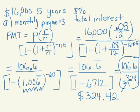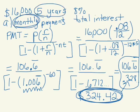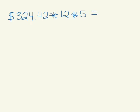The next part says, what's your total interest? So we pay this amount, $324.42, every single month for 5 years. That means we pay out a grand total of $19,465.20.